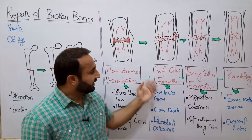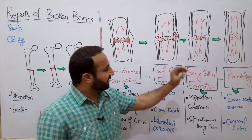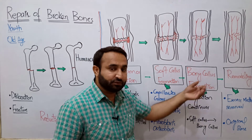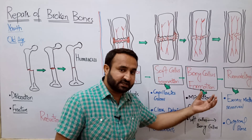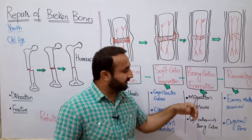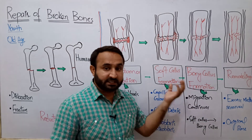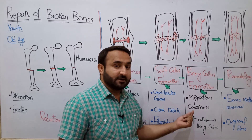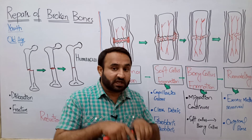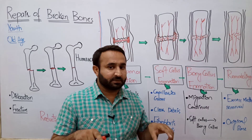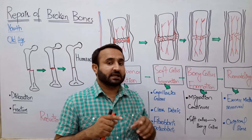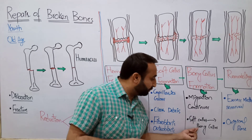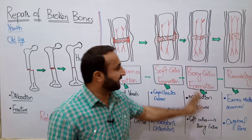Phase 3 — Bony Callus Formation: The soft callus converts into bone. Migration of fibroblasts and osteoblasts continues. Osteoblasts divide and form bone cells; fibroblasts form fibrocartilage and ligaments, joining the broken bone parts together. When osteocytes form, collagen protein arrives, making the osteocytes hard due to the ground substance of collagen. Additionally, calcium deposition begins — mineralization starts — so the bone becomes hard. The soft callus turns into bony callus.